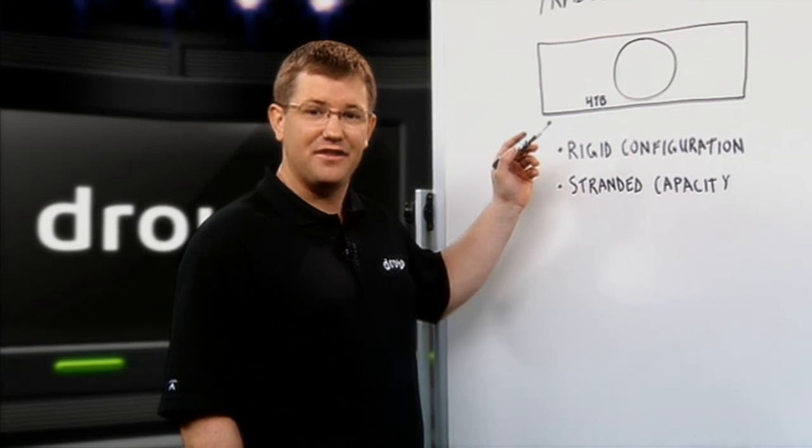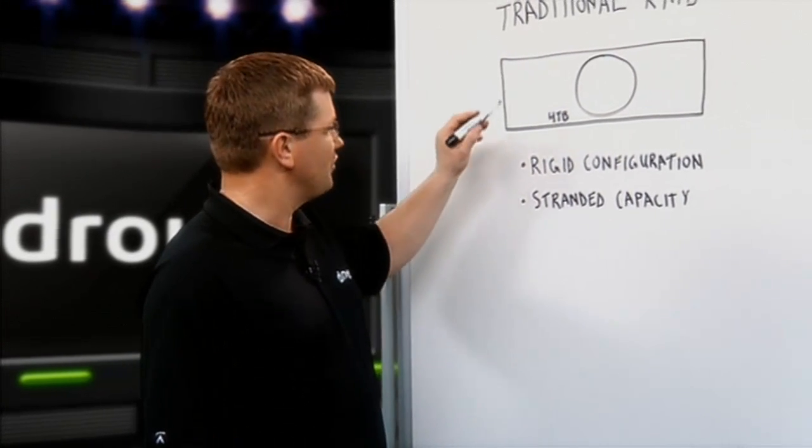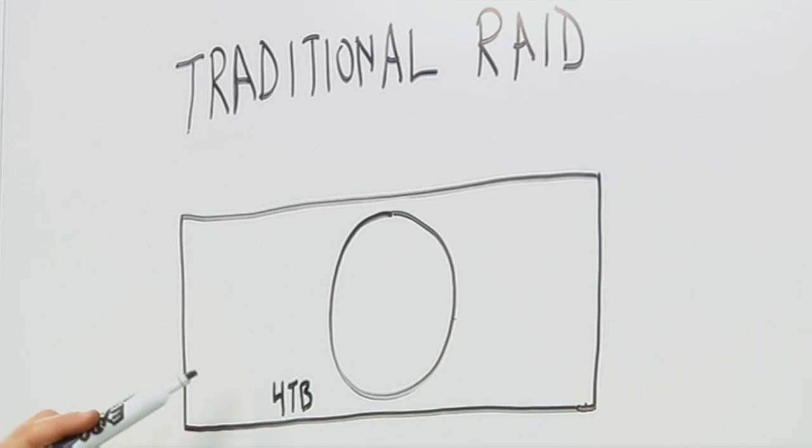With a traditional RAID array that does not have thin provisioning technology, it's a more rigid configuration. So for this example, we have an array that has four terabytes of usable capacity.